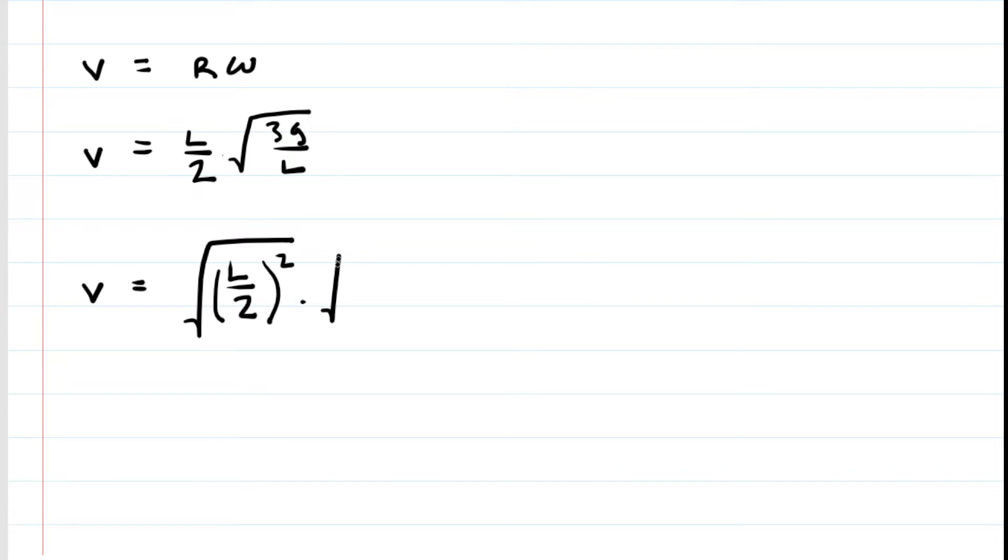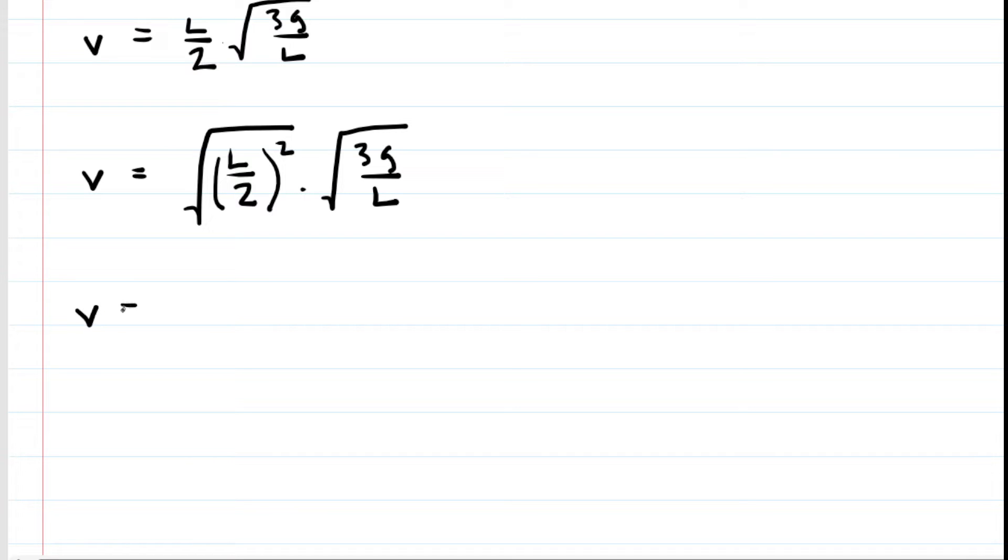And that might seem like hocus pocus, but what that does is it creates two radicals that are being multiplied together. And when you have two radicals that are multiplied together, you can actually take the square root of the product of those two quantities. So in other words, we're going to bring the L over 2 squared underneath this giant radical along with the 3G over L.